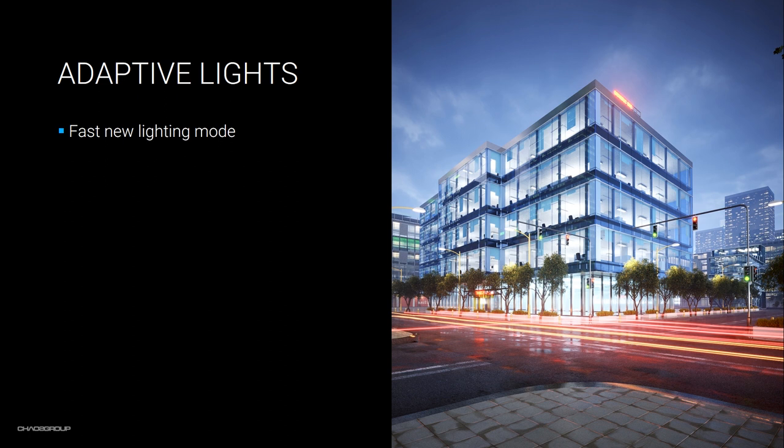Let's jump into the first major feature: the new lighting mode called Adaptive Lights. This is a new lighting algorithm that speeds up rendering significantly, especially in scenes containing many light sources. The algorithm analyzes the scene, determining which light sources are of greater importance to the overall lighting. Instead of treating all lights with the same importance, V-Ray focuses more ray tracing calculations on the lights that matter most.